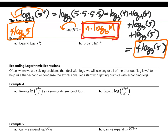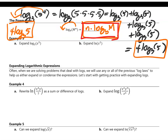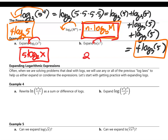Examples using the power rule: letter a, expand log base 2 of x to the 5th — the power is 5, so that's 5 log base 2 of x. Letter b, expand ln of x squared — the power is 2, so that's 2 ln of x.